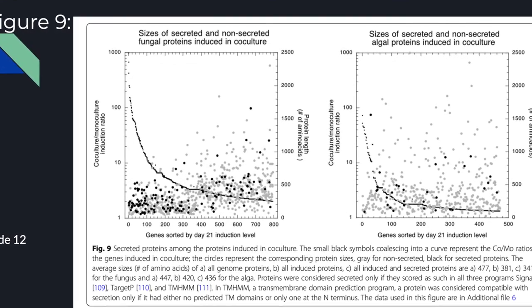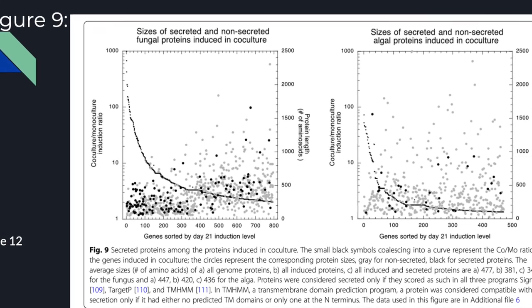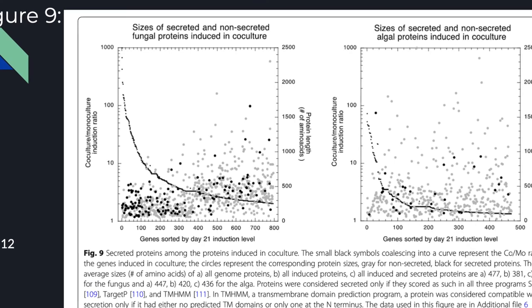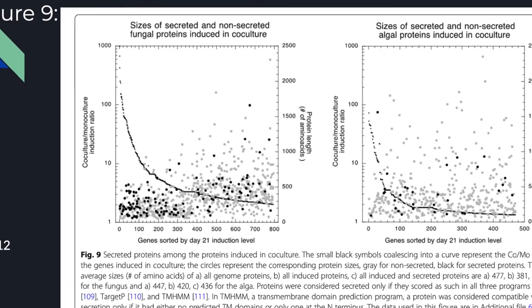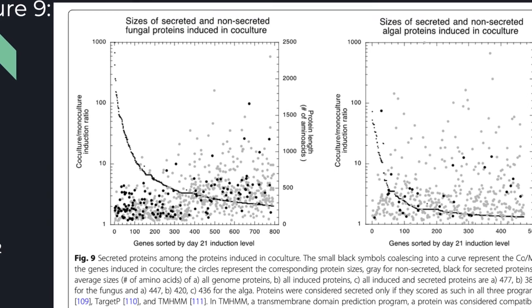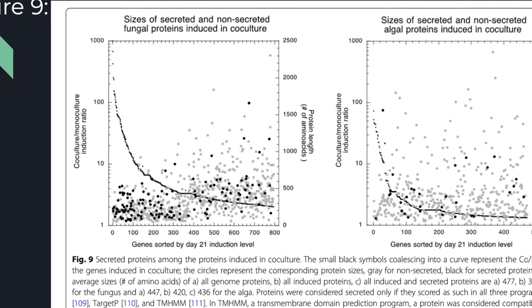Researchers then looked more specifically at frequency of secreted proteins as they found that relative to their overall genomic frequency secreted proteins make up a larger portion of the total transcriptome. This is interesting to notice however the figure is not overly clear.